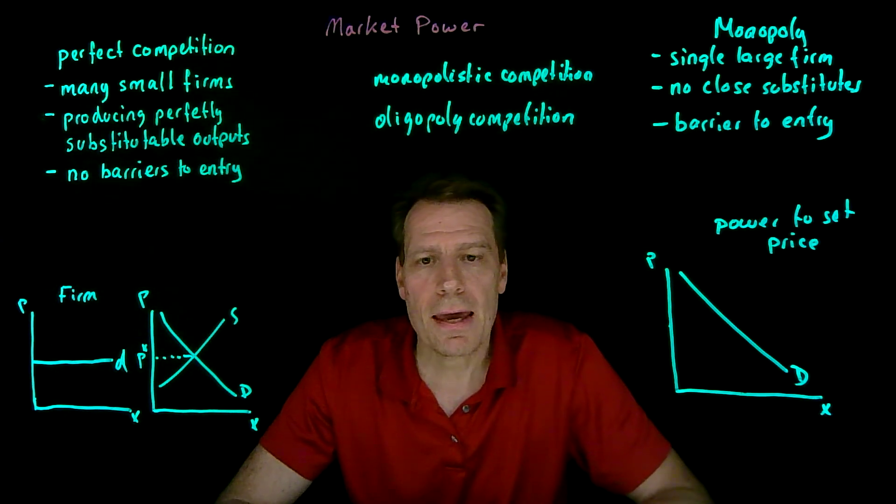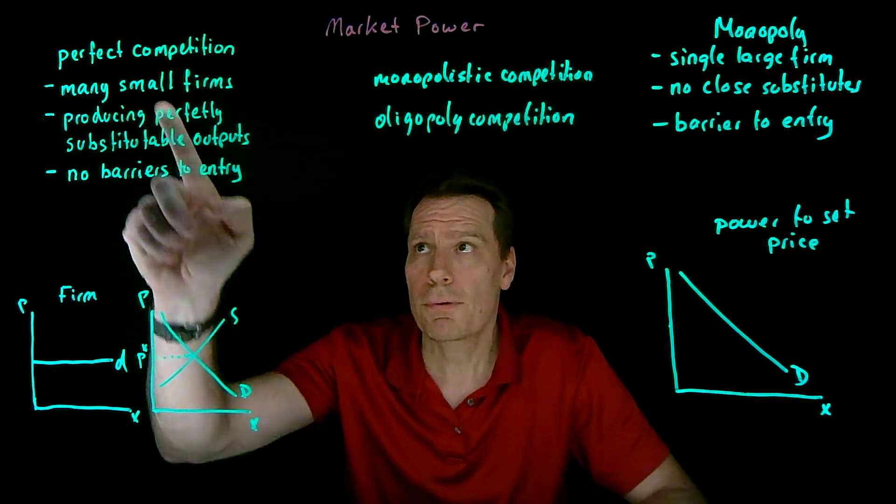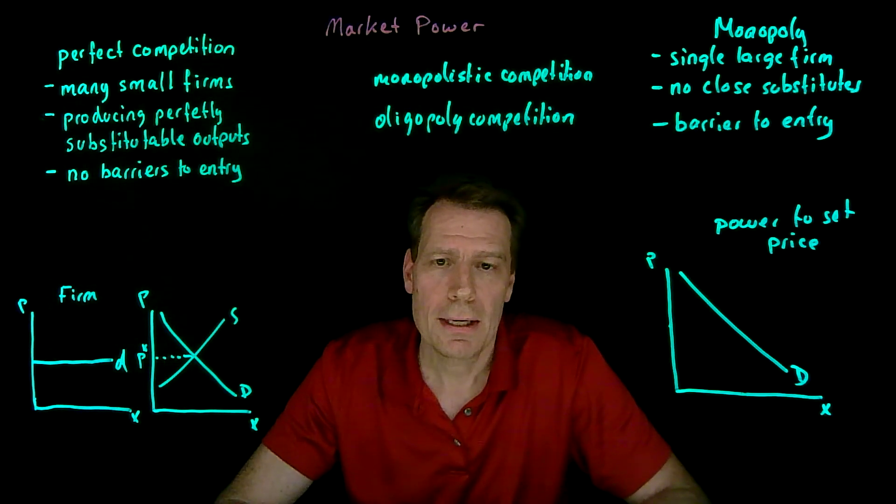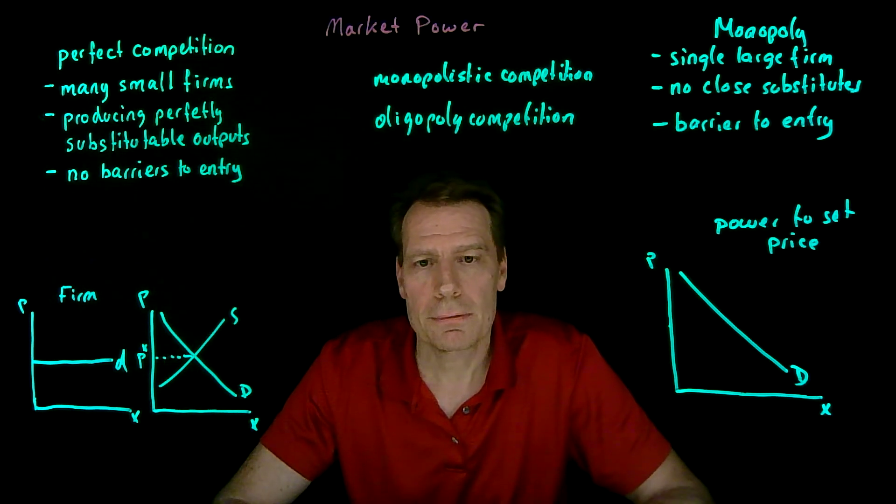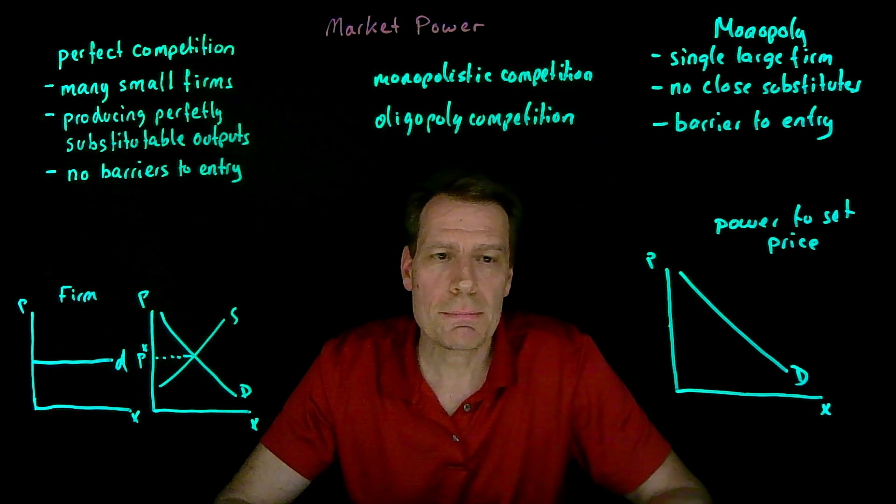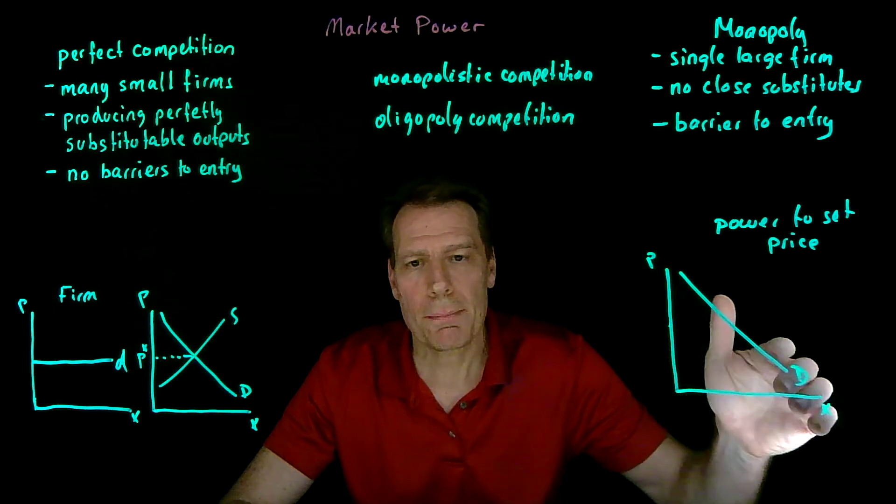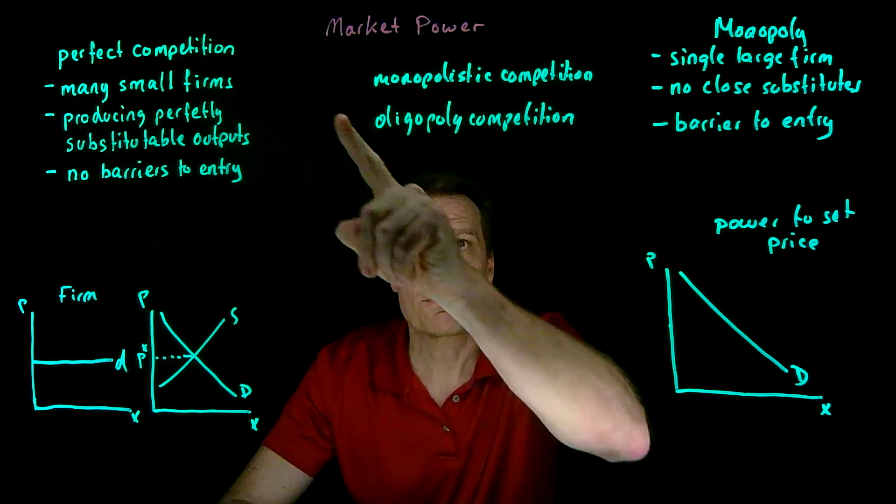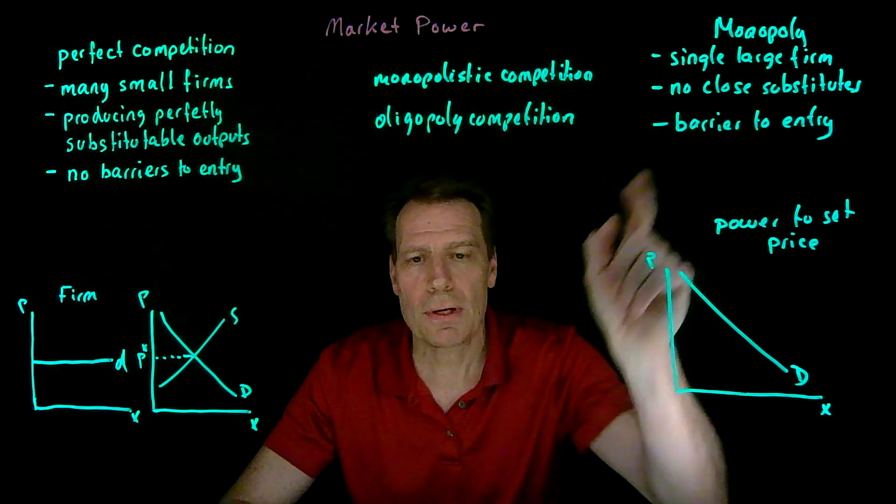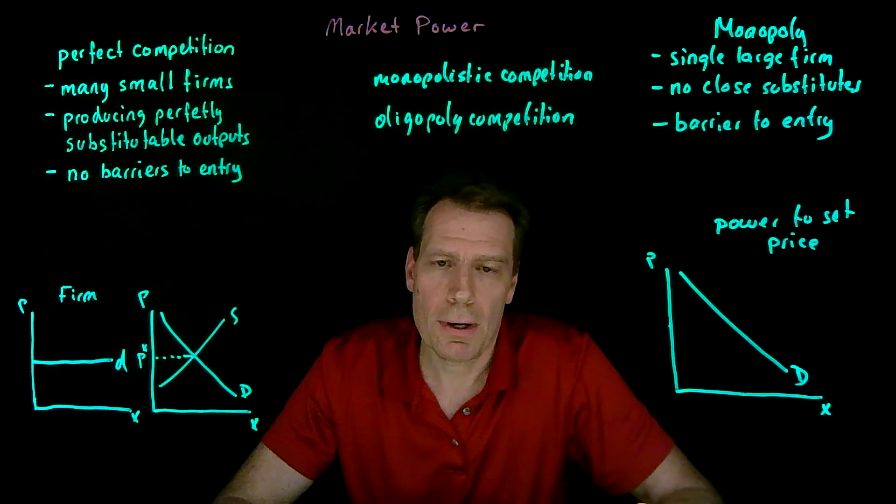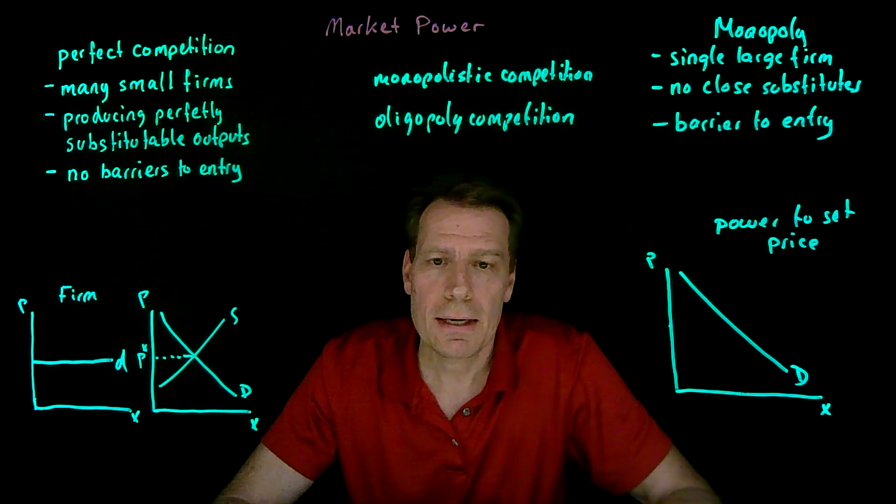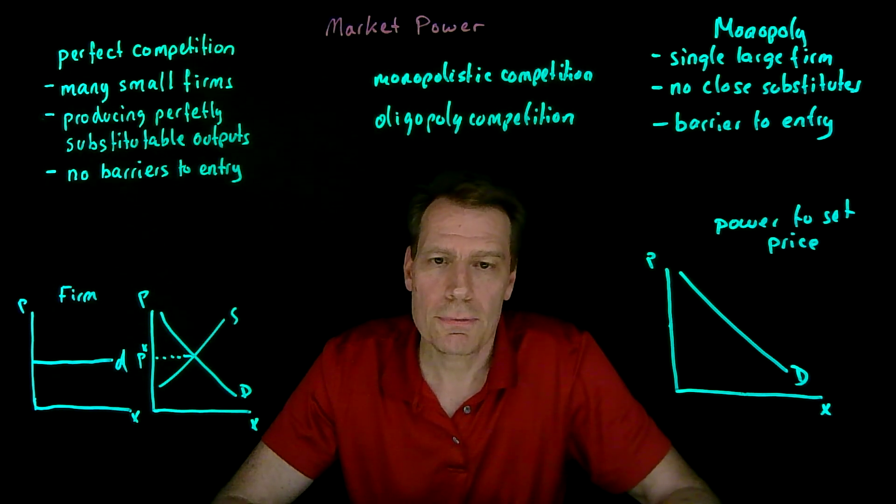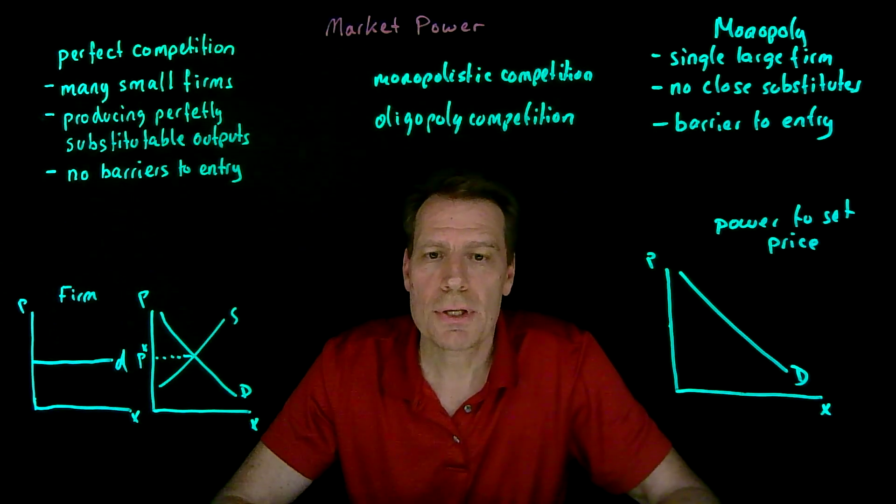The thing that every firm other than perfect competition has in common is that they face a downward sloping demand curve. It may not be the extreme of capturing an entire market with no close substitutes, but all firms between these extremes have some market power and therefore face a somewhat downward sloping demand curve that enables them to set price.